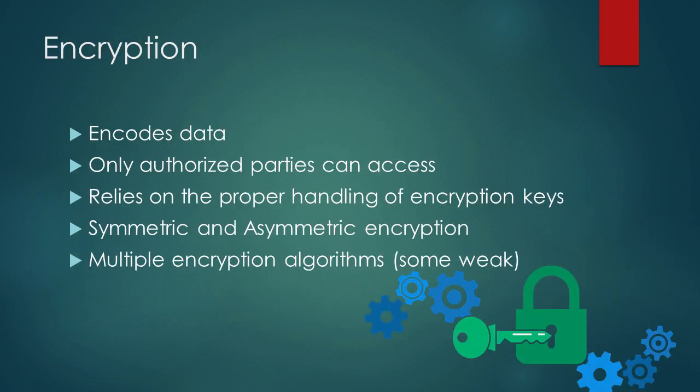One of the main ways that organizations ensure confidentiality is through encryption. Encryption encodes the data to make it unreadable by those who do not possess the special encryption key. Only those with the encryption key can read the data. There are two types of encryption: symmetric and asymmetric, each with their disadvantages and advantages. There are multiple different encryption algorithms, and it is important to understand this because implementations of weak encryption algorithms are putting the confidentiality of data at risk.